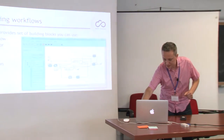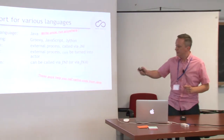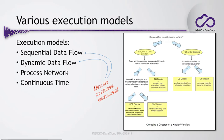There is a cheat sheet that helps you determine how your workflow should work — a simple yes/no table. For example: does the workflow explicitly depend on time? No — then you can choose from these directors. Does the workflow require independent threads? And so on. You can look at this chart and decide what will probably be the best execution model for your particular case.